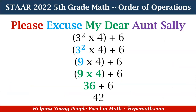Let's look at some examples. We have (3² × 4) + 6. For our P, parentheses, we are going to do the operations in parentheses first. Inside our parentheses, we have 3² × 4. For our E, exponents, we first address 3 squared. 3 squared is 3 times 3, which equals 9. So now inside my parentheses, I have 9 times 4. We have multiplication, so we multiply 9 times 4, and that is 36.